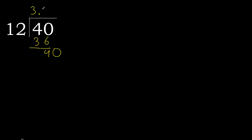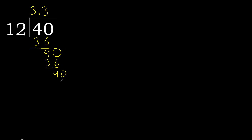40 again. 12 multiplied by 3 is 36. Subtract. Complete. This repeats — therefore 3, repeat, repeat.